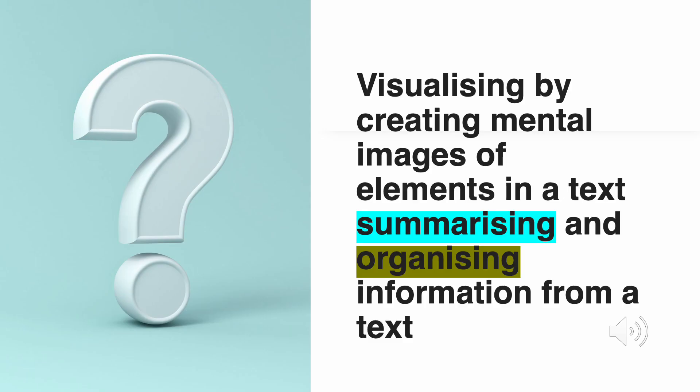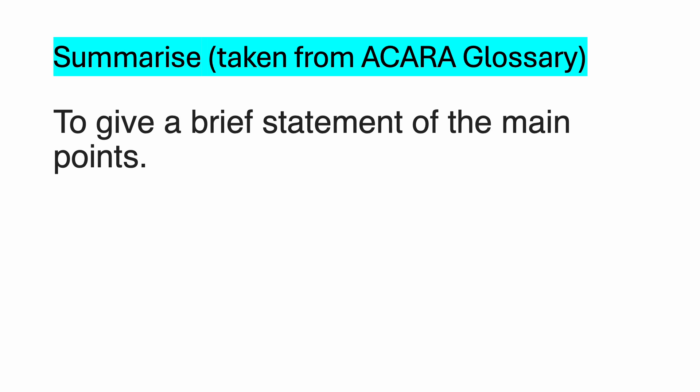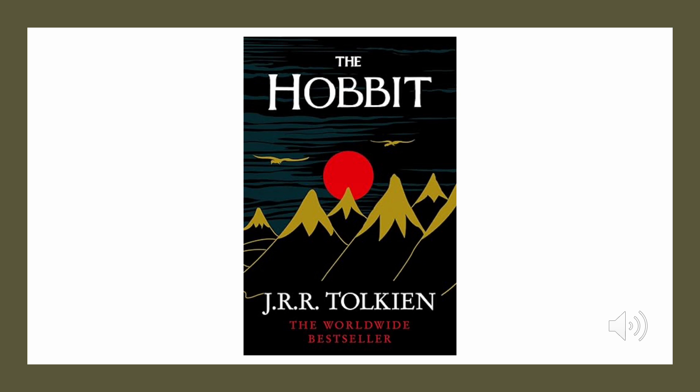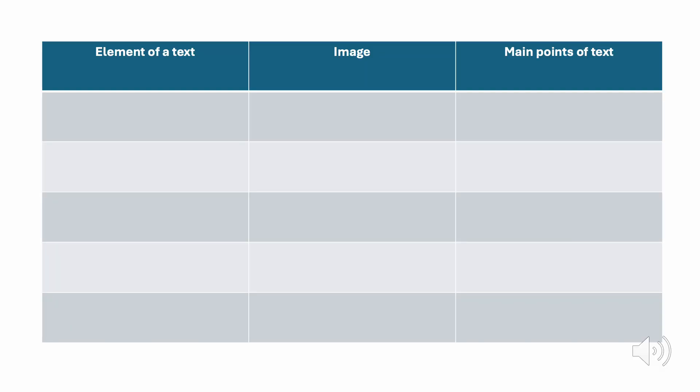The fifth comprehension strategy, according to ACARA, is visualising by creating mental images of elements in a text, summarising and organising information from a text. The teacher and the students engage with The Hobbit by J.R.R. Tolkien. They collaboratively identify elements of the text, create an image of the text based on their mental images, and then determine the main points of the text.